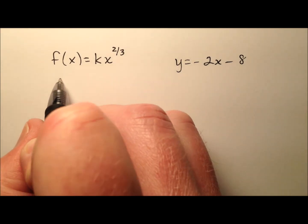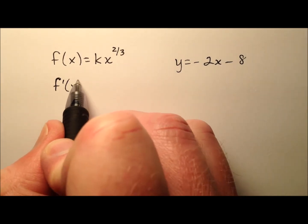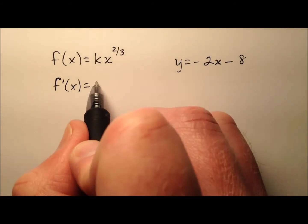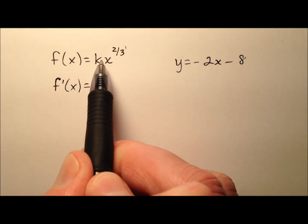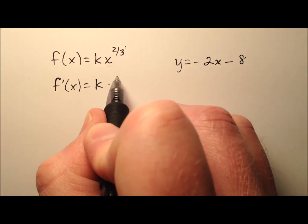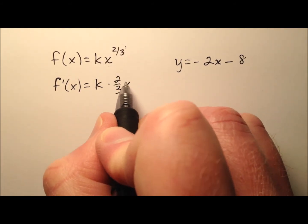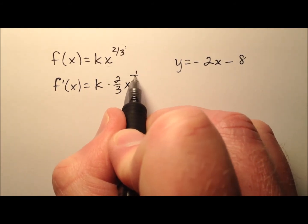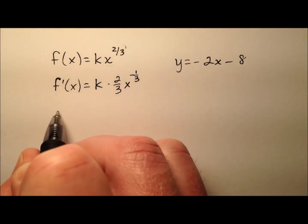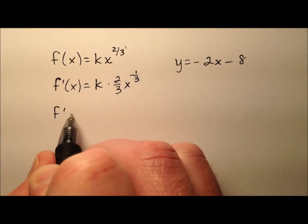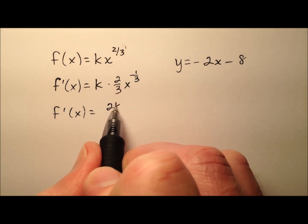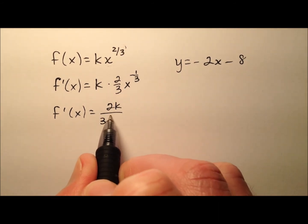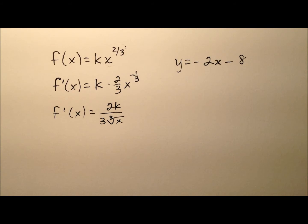The first thing we can do is take the derivative of this function, which will help us find the slope. So, k times x to the two-thirds — we'll bring the two-thirds out front and then subtract one from the power. Simplifying, we get 2k over 3 times the cubed root of x. That's our derivative.